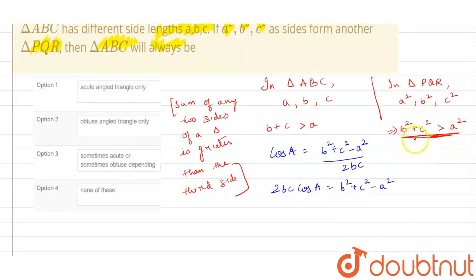From here, if you can see this equation, let us take this equation as 1 and this equation as 2. If you see equation 1, B square plus C square is always greater than A square.